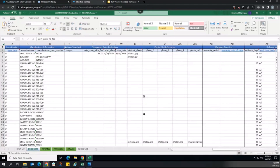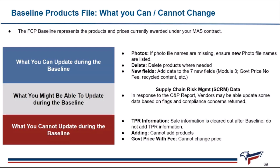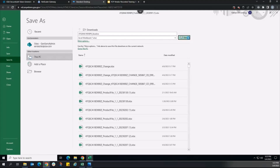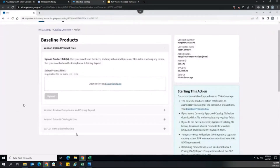Additionally, vendors should check the photos fields. If photo file names are missing, ensure new photo file names are listed. Double-check the full list of products and delete products where needed. For information vendors cannot change during the baseline action: vendors cannot add TPR information, as all TPR information will be ignored once the baseline product action is published; cannot add products that have not already been awarded on the contract; and cannot change the government price with fee field. Vendors should add photo file references for any additional photo files that will be provided. The information submitted shall be reflective of the prices currently awarded on the contract. Once ready, the vendor should save the product file in Excel.